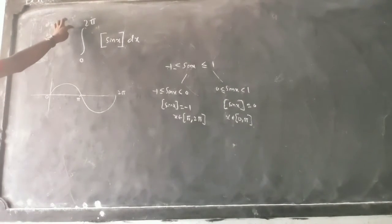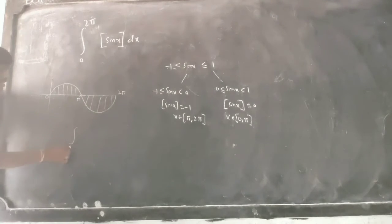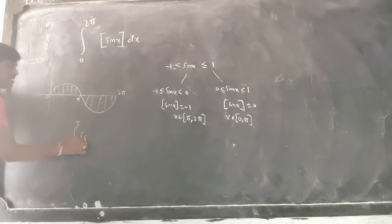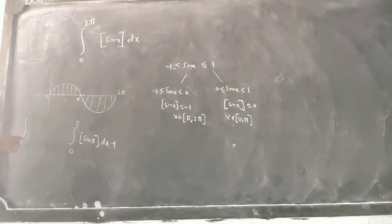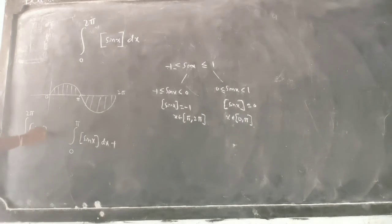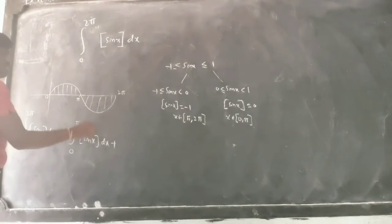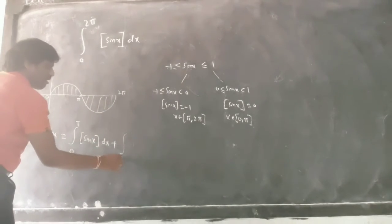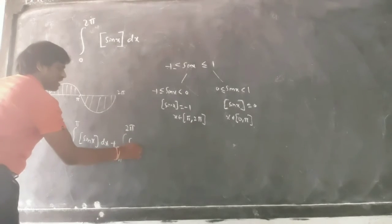So I can break this function: the integral from 0 to 2π of the greatest integer of sin x dx can be split as integration from 0 to π of greatest integer of sin x dx, plus integration from π to 2π of greatest integer of sin x dx.